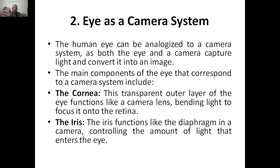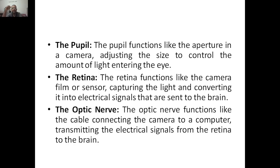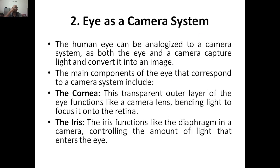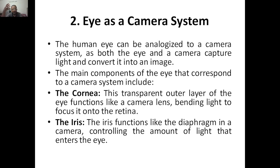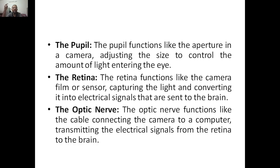So first, we need the cornea to bend the light and focus it on the retina. The amount of light is controlled by the iris and pupil. The retina is used to create the image, and then electronic signals are sent to the brain via the optic nerve. So these are the major five components of the eye which act as different components in the camera: the cornea acts as the lens, the iris acts as the diaphragm, the pupil acts as the aperture, the retina acts as the sensor or film of a camera, and the optic nerve acts as the cable.